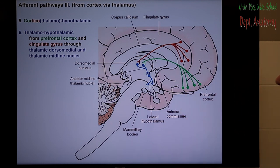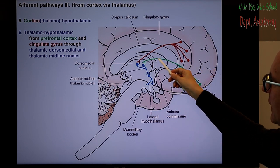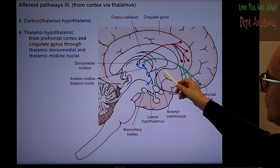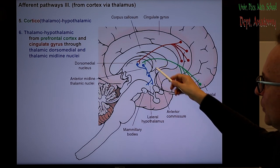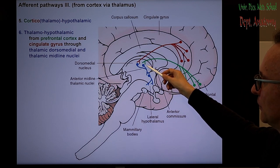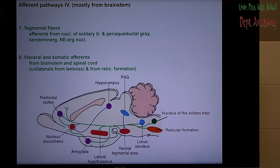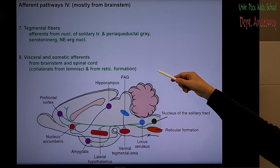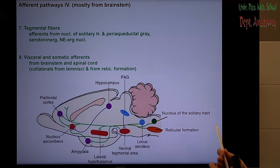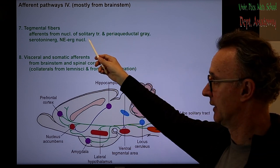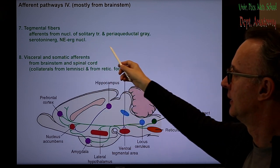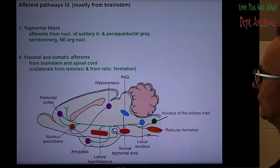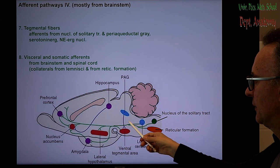Afferents also come from the cortex via the thalamus — for example from the cingulate gyrus or directly from the thalamus — called the corticothalamohypothalamic tract, including the dorsomedial nucleus and anterior midline thalamic nuclei. The hypothalamus also receives input from visceral sensory nuclei, such as the solitary tract nucleus of the brainstem, and from monoaminergic systems: serotonergic input from the raphe nucleus, noradrenergic from the locus coeruleus, and dopaminergic from the ventral tegmental area.